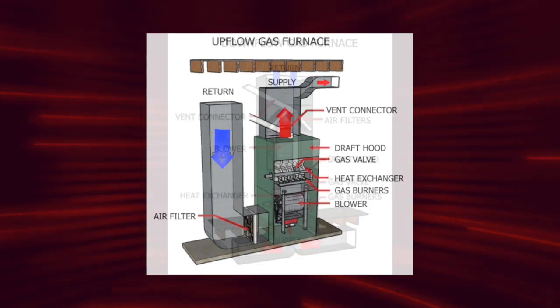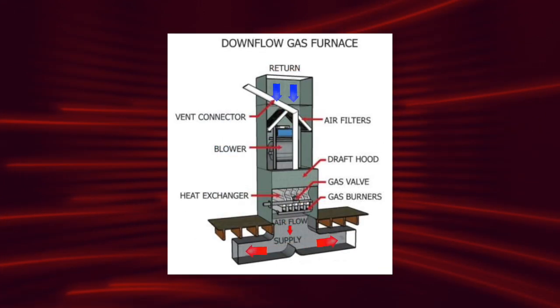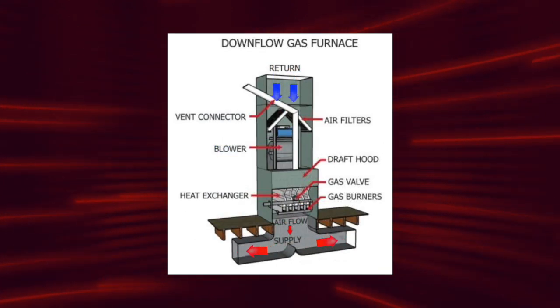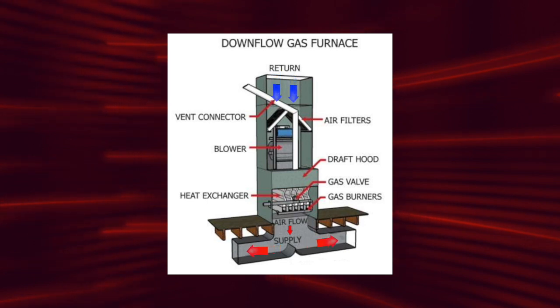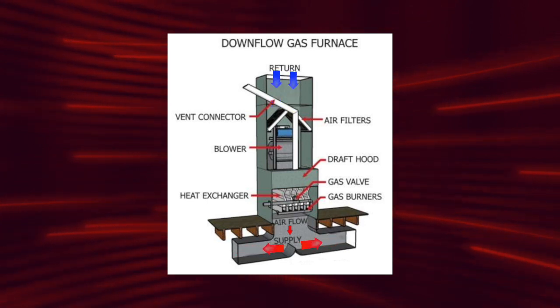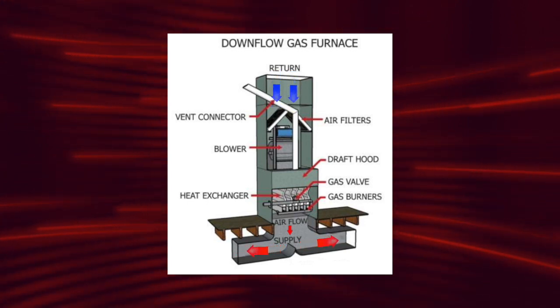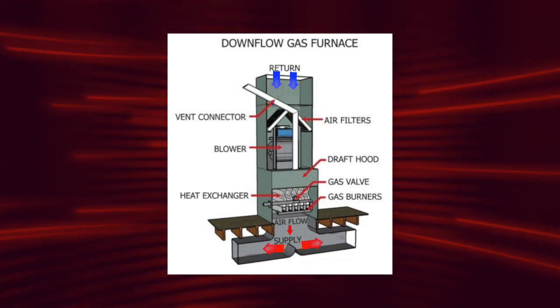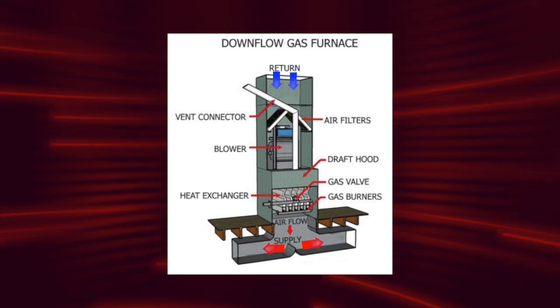In a downflow system configuration, airflow comes in at the top of the air handler or furnace and flows out the bottom of the unit. This type of unit is most common when the unit is installed in a closet.